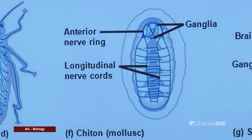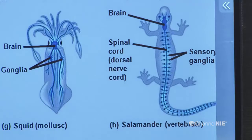Next we look at salamanders, which are vertebrates. They contain a central nervous system enlarged to form the brain, with the rest of the area forming the spinal cord, which also has segmented ganglia. That is the arrangement of the nervous system across different groups of organisms.